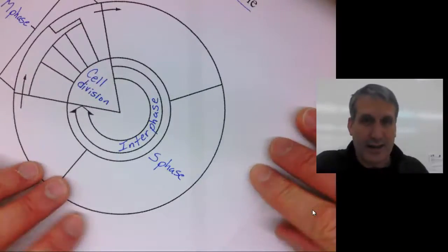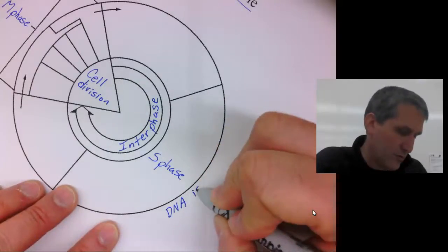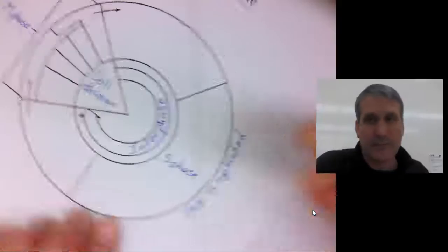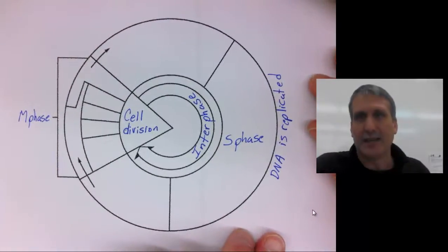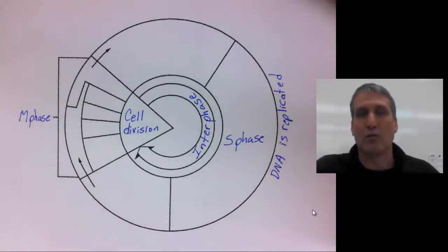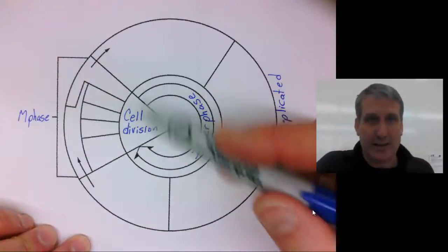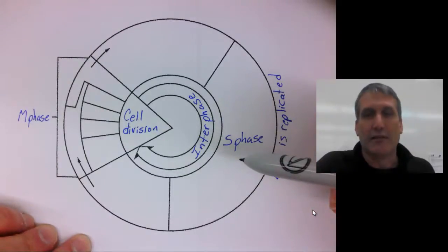During this phase, the DNA is replicated. This is important because you can't have cell division without the DNA being replicated. Now all we need to do is fill in some more of the detail of these phases.